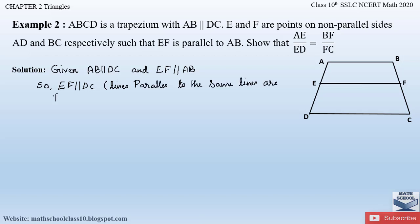Now, to prove that AE by ED equals BF by FC — if you remember in Theorem 2.1 we had a triangle, so we could easily apply it. But here we have a trapezium, so we need a construction. Let us join AC to intersect EF at point G. Write down: join AC to intersect EF at G.